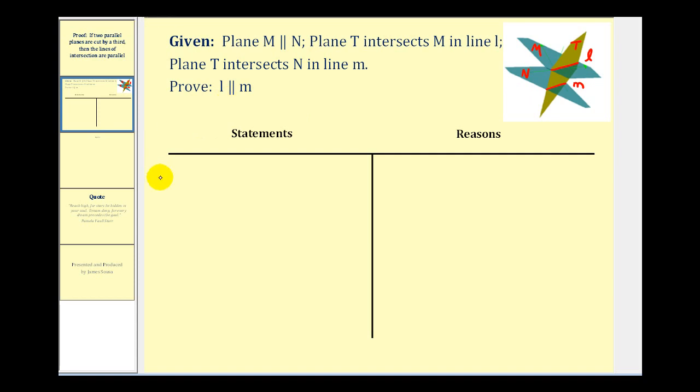So we'll start by stating the given information, and I'll state this in a little different way than it's given. If plane T intersects M in line L, we can say that line L is in plane T and plane M.